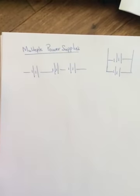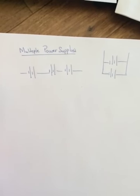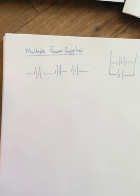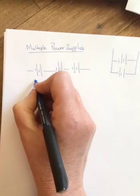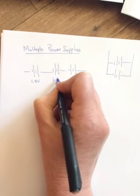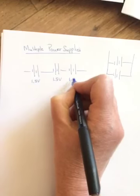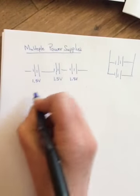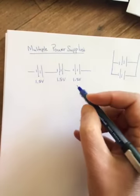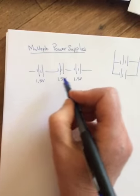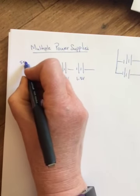So what happens if they're hooked up in series? Suppose that each of these are 1.5 volts. When you hook them up in series, then your total voltage is just going to be 7.5. So when you hook power supplies up in series, they give you overall more voltage for the circuit.